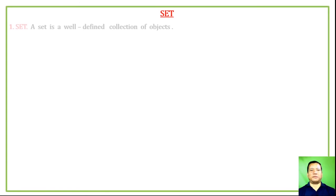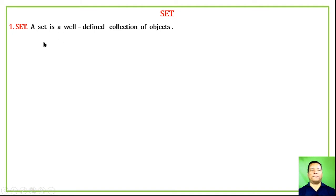What is a Set? Define a Set. A set is a well-defined collection of objects. A collection must be well-defined to qualify as a set.